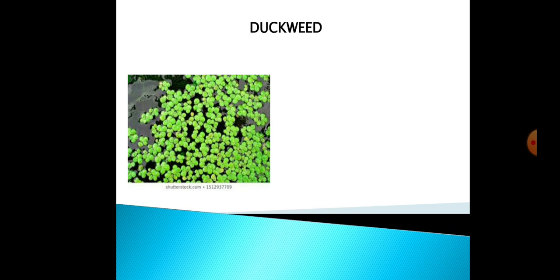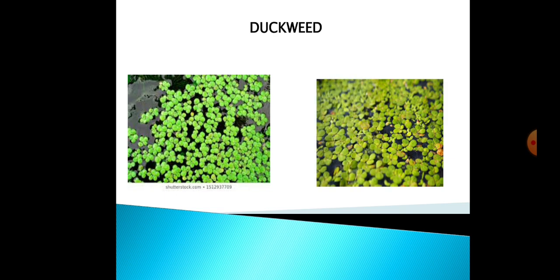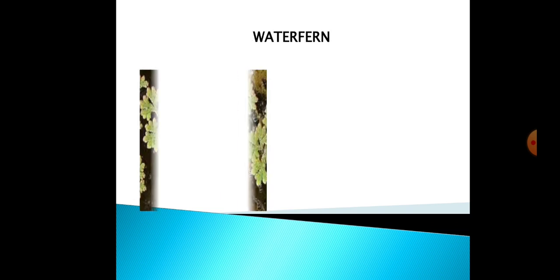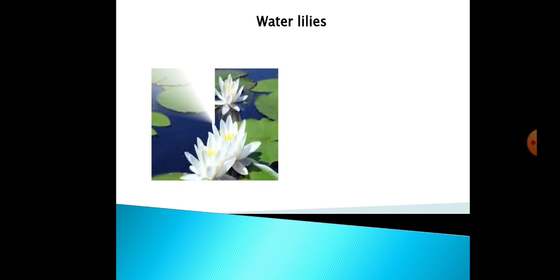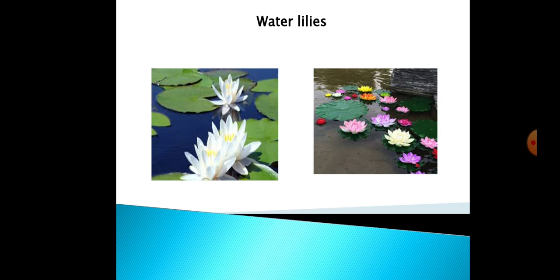The first category is plants floating on the surface of the pond water. The first example is duckweed, which floats on the surface. Another example is water fern, also floating on the surface. Then we have water lilies — you can see how giant the leaves of the water lilies are — also floating on the surface.